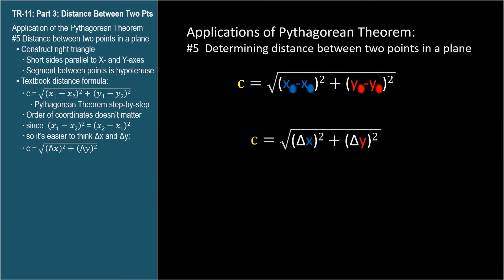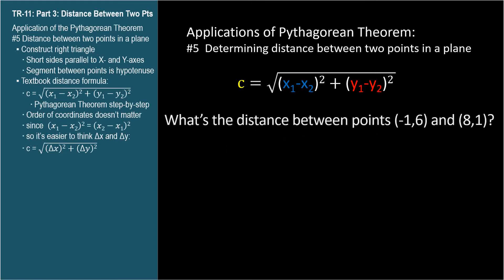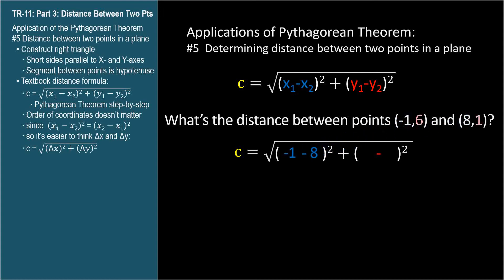Let's try it out. What's the distance between points negative 1 comma 6 and 8 comma 1? Please don't think delta x is 7 — we still need to be careful with our math. The difference in x coordinates, delta x, is negative 1 minus 8. The difference in y coordinates, delta y, is 6 minus 1.